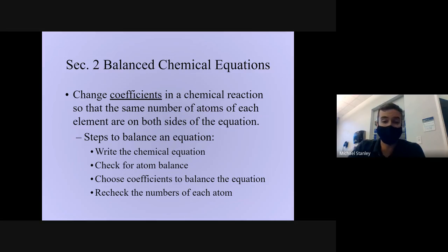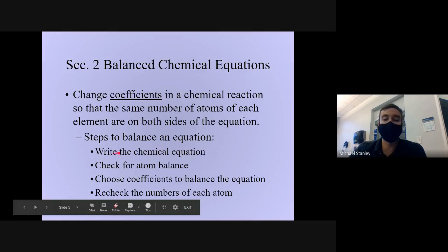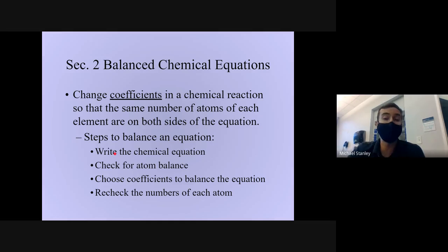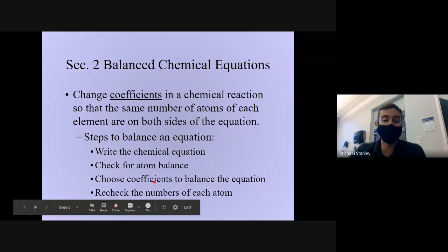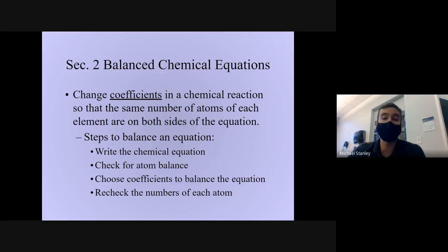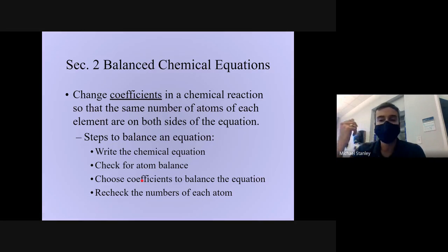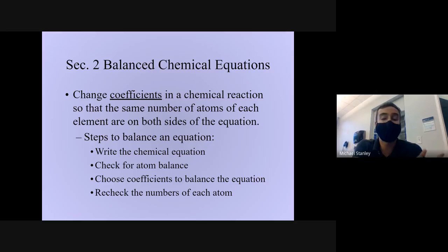The general way to balance an equation: write it out, see how many atoms are on each side, then change the coefficients to try and make them balanced. Normally when you write it out you don't have any coefficients — you have to add them. Once you think it's balanced, check the number of each atom to see if they're equal, or if you need to adjust those coefficients more. It's kind of hard to explain abstractly, so I'm going to take you through a basic example.